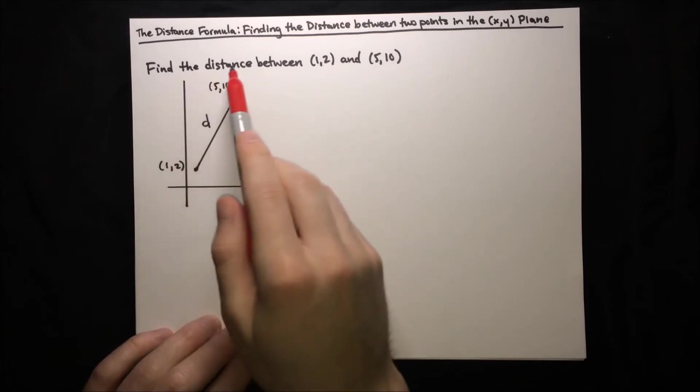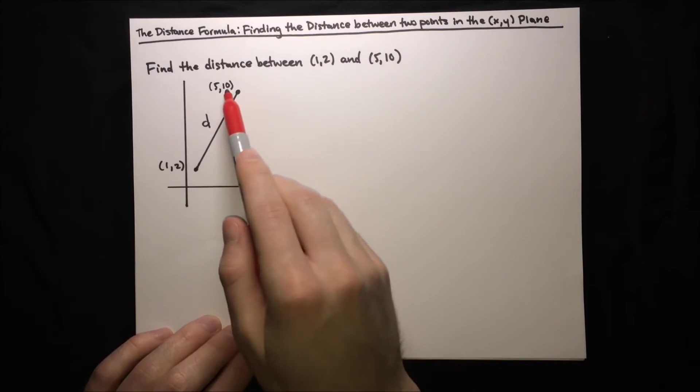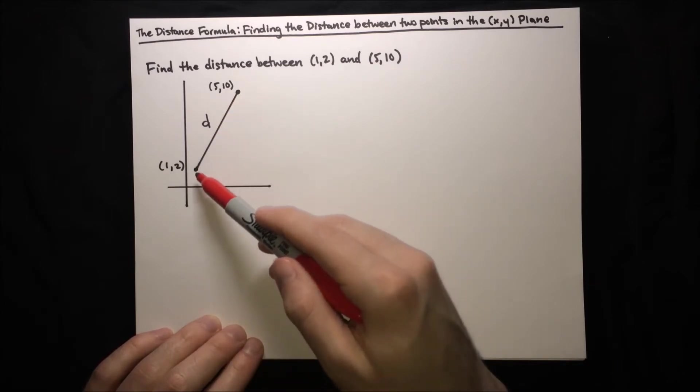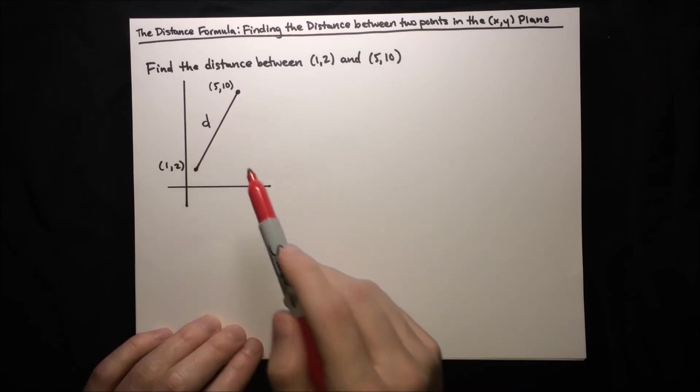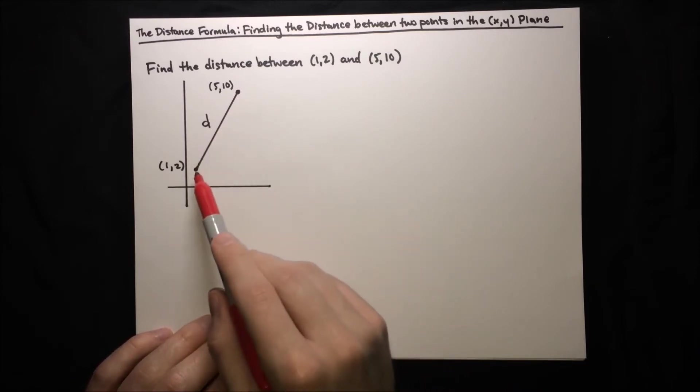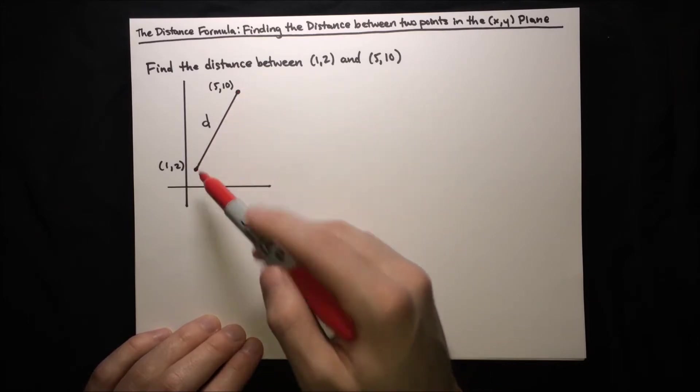So let's try to find the distance between the point (1,2) and the point (5,10). We're just trying to find the length of this diagonal connector between them, the length will be indicated by the letter d. If this point were right above this point, we could just count the units it goes up. And if this point were right across from this point, we could just count the units it goes across. But because the distance is diagonal, that makes it a little bit more difficult.